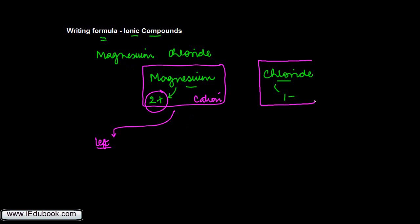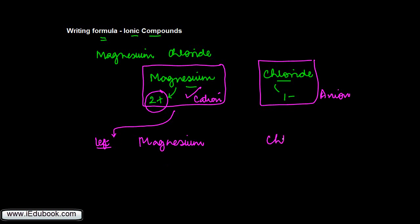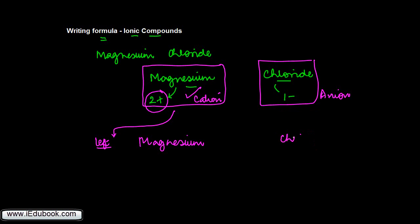On the other hand, chloride is the one with the negative charge — the anion. So when writing the formula, the one with the positive charge is written on the left side, meaning magnesium goes on the left, and chloride or chlorine is written on the right side. Then we write the valency of the ions: magnesium has a valency of two and chlorine has one.